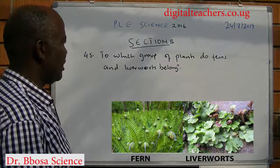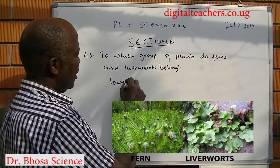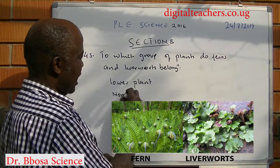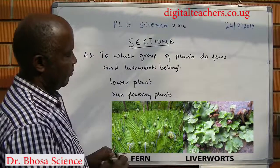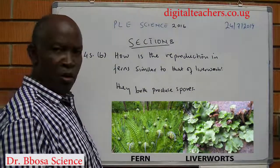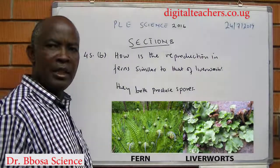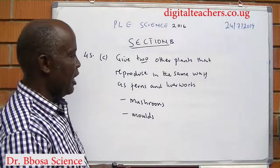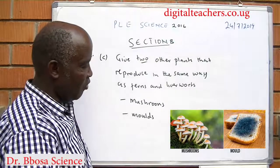To which group of plants do ferns and liverworts belong? They are lower plants, also called non-flowering plants. How is reproduction in ferns similar to that of liverworts? They both produce spores. Give two other plants that reproduce in the same way: mushrooms and mosses also reproduce by production of spores.